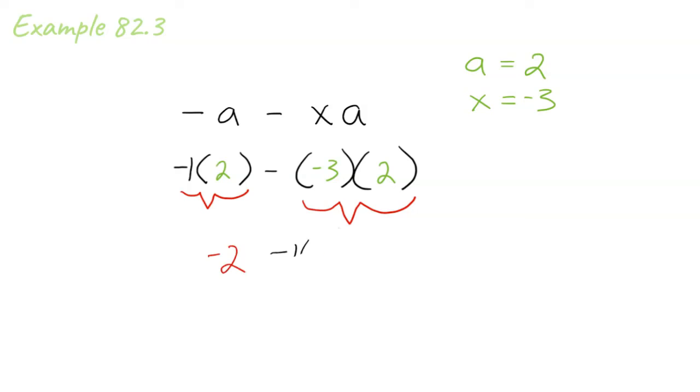In example 82.3, we have another expression to evaluate. We make our buckets and then we drop in our values and then we go ahead and multiply. Seeing the negative in front of that first bucket, we drop in a 1. Negative 1 times 2 is negative 2.